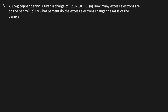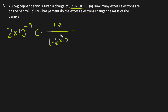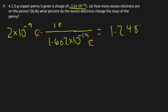Problem 3: A 2.5 gram penny is given a charge of negative 2 times 10 to the negative 9th power coulombs. How many excess electrons are on the penny? We convert the charge to number of electrons, ignoring the negative sign. So 2 times 10 to the negative 9th power coulombs times 1 electron over 1.602 times 10 to the negative 19th power coulombs. The units cancel, giving 1.248 times 10 to the 10th power electrons.